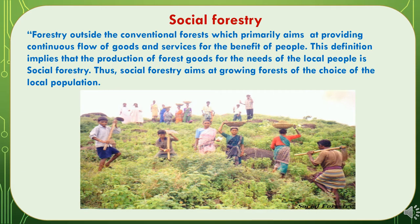What is Social Forestry? Social Forestry is the forestry outside the conventional forests which primarily aims at providing a continuous flow of goods and services for the benefit of people. This definition implies that the production of forest goods for the need of the local people is Social Forestry. Thus, Social Forestry aims at growing forests of the choice of the local population, playing a very important role in providing fuels, fodders, woods, and forest produce to the community for their usage, and aims for the development of local communities residing near the forest.